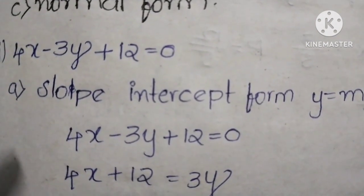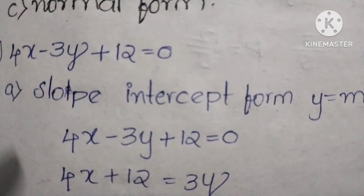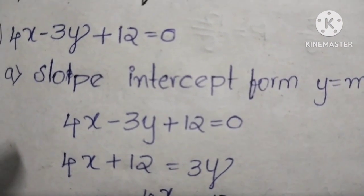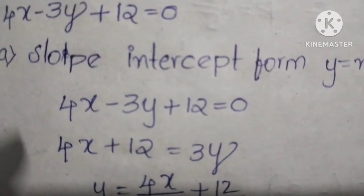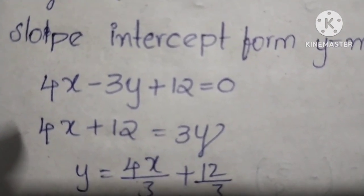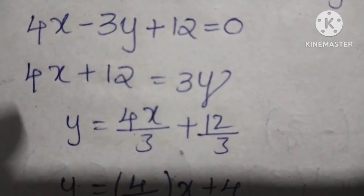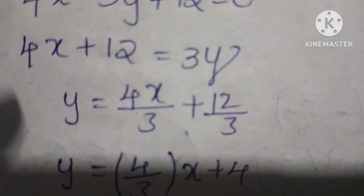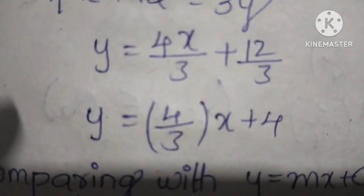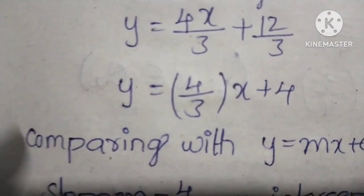Starting with 4x minus 3y plus 12 equals 0, transfer the 3y to get 4x plus 12 equals 3y. Now y equals 4x by 3 plus 12 by 3. This is the intercept form, so y equals 4 by 3 x plus 4.